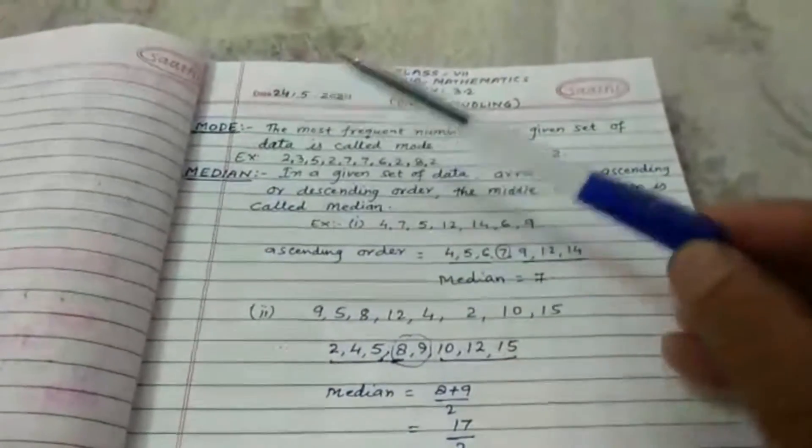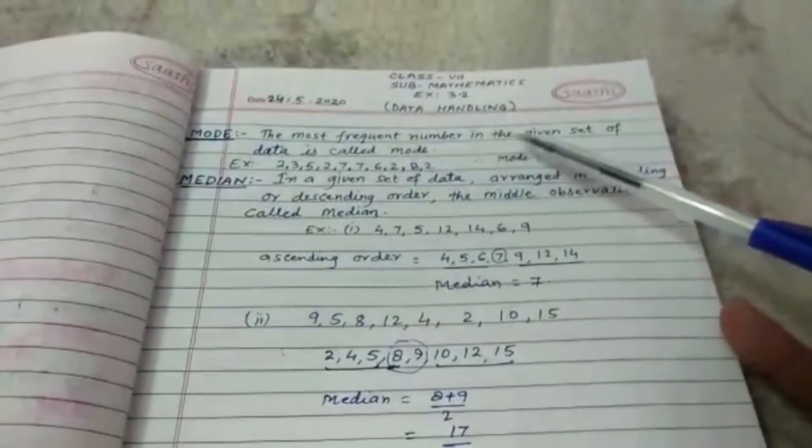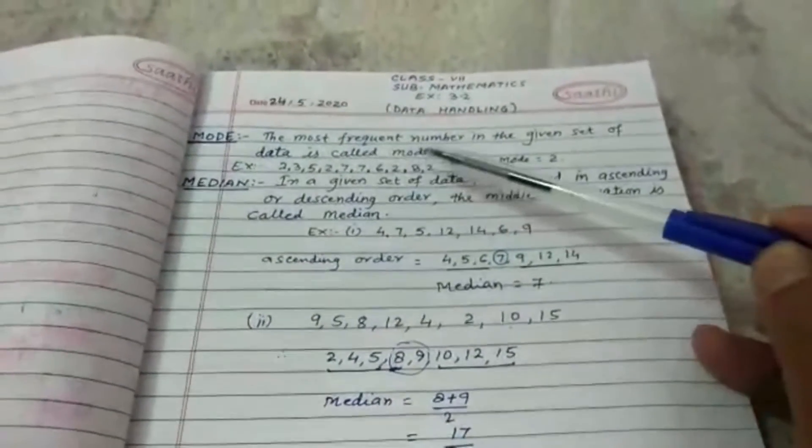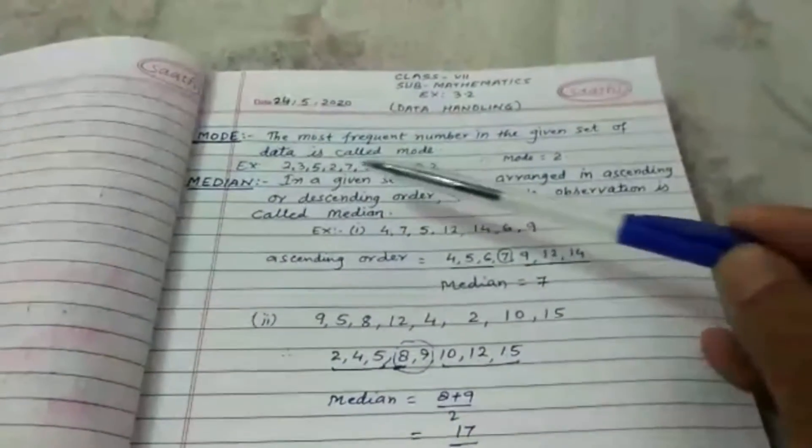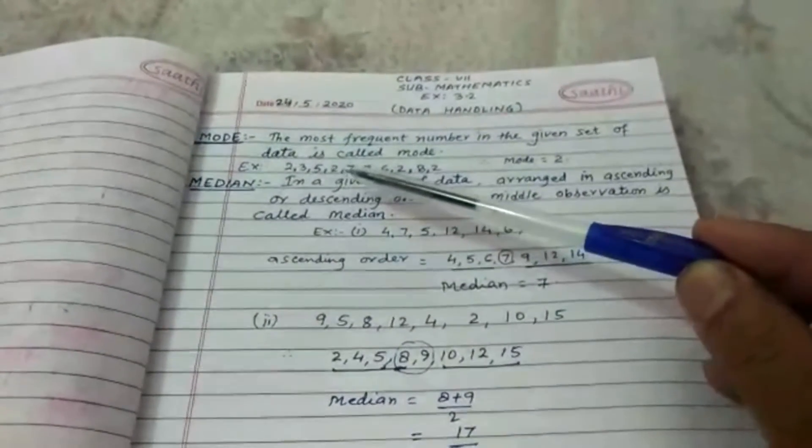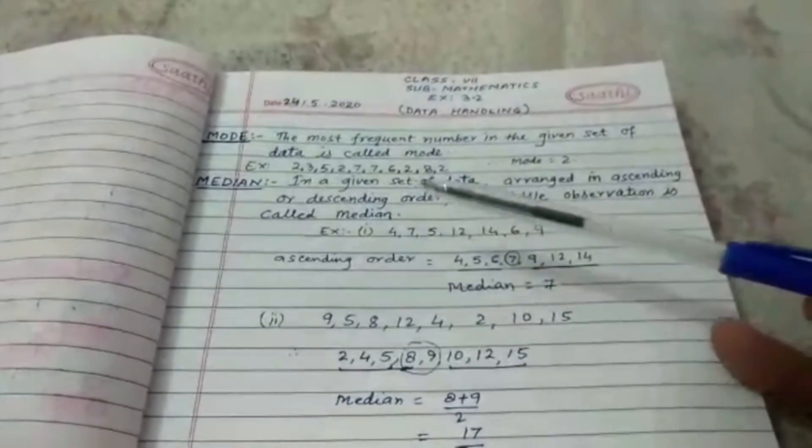First thing is mode. What is mode? The most frequent number in the given set of data is called mode. The most frequent number means a number having the largest frequency in the given set of data.